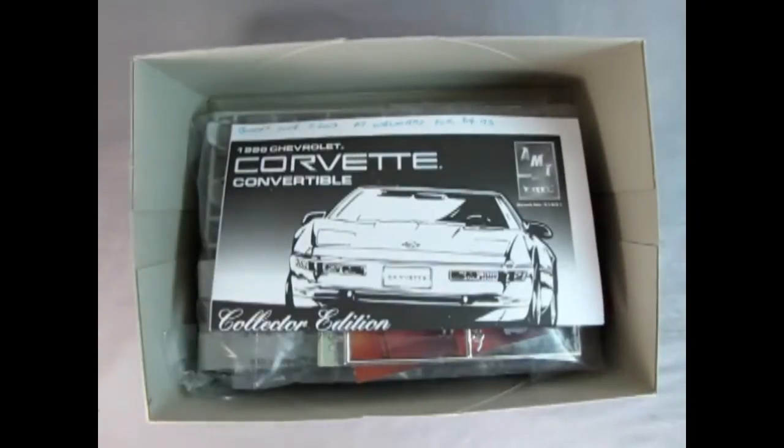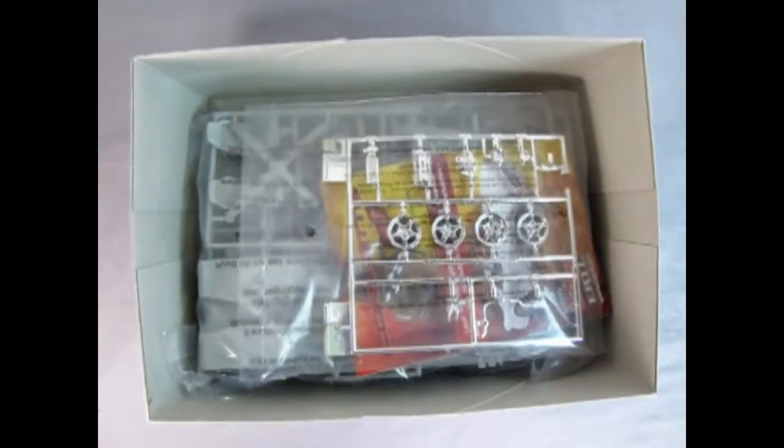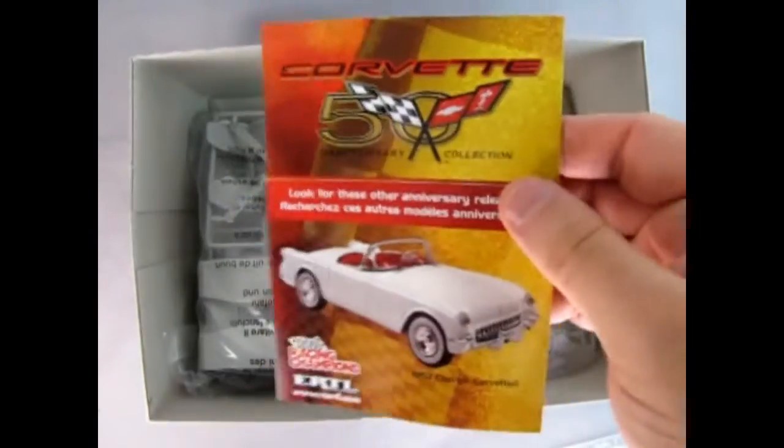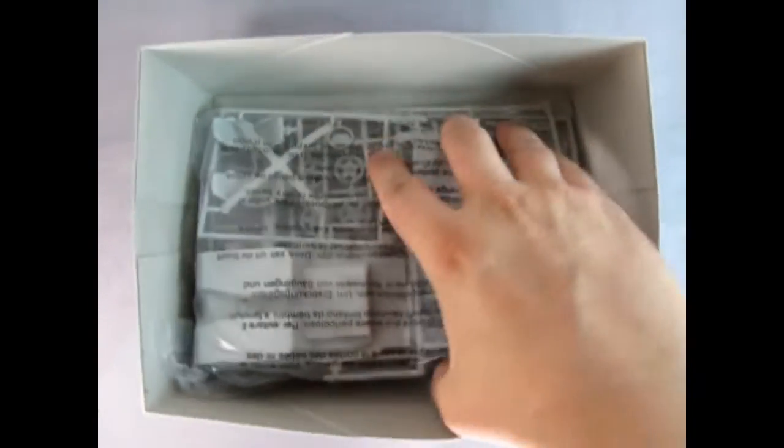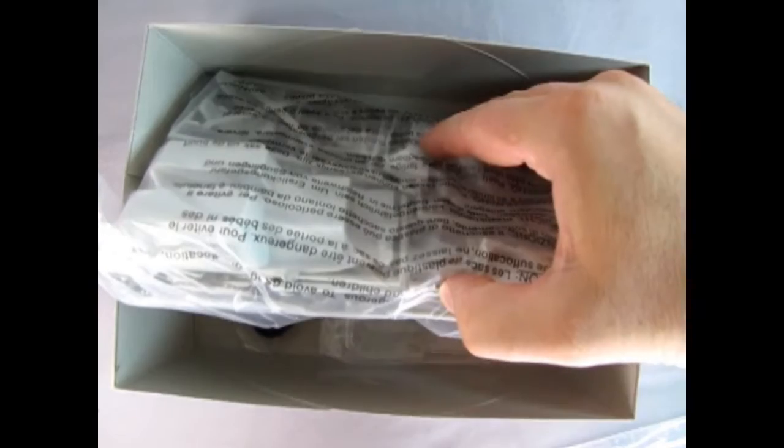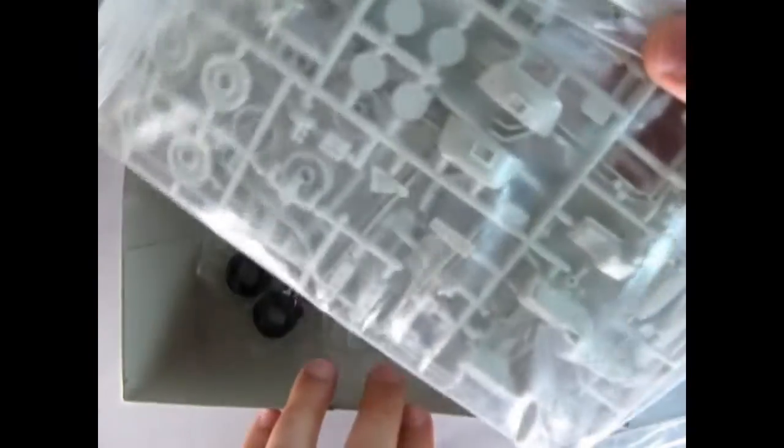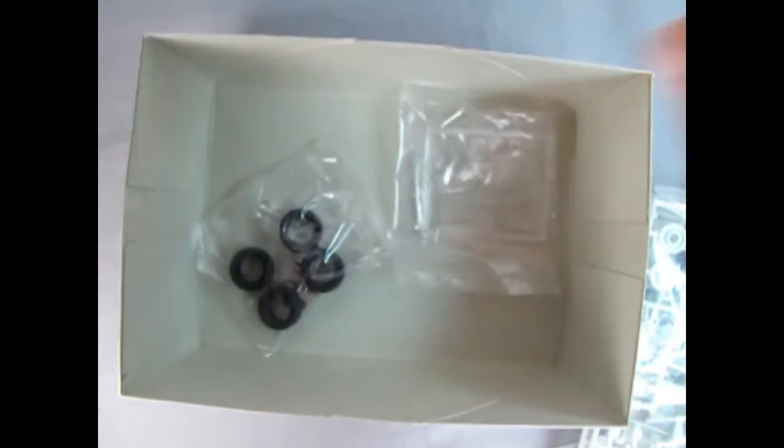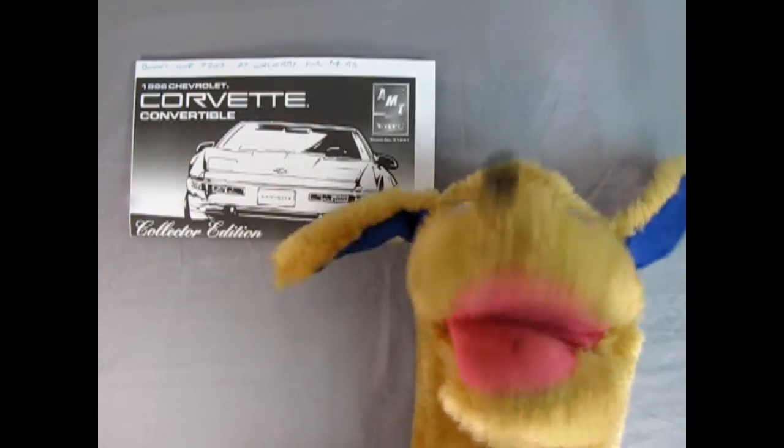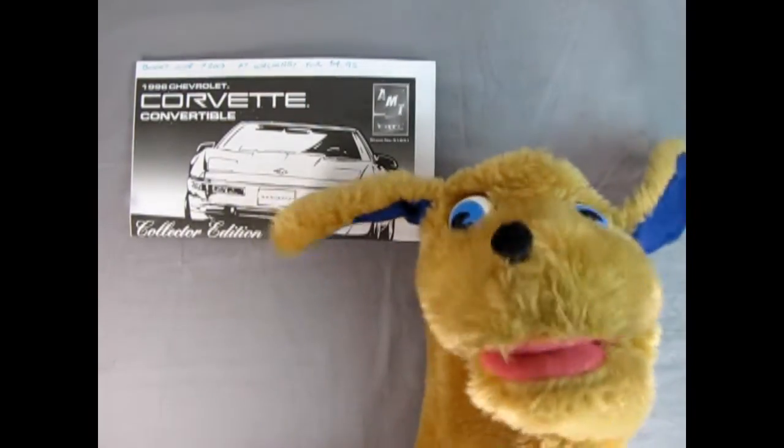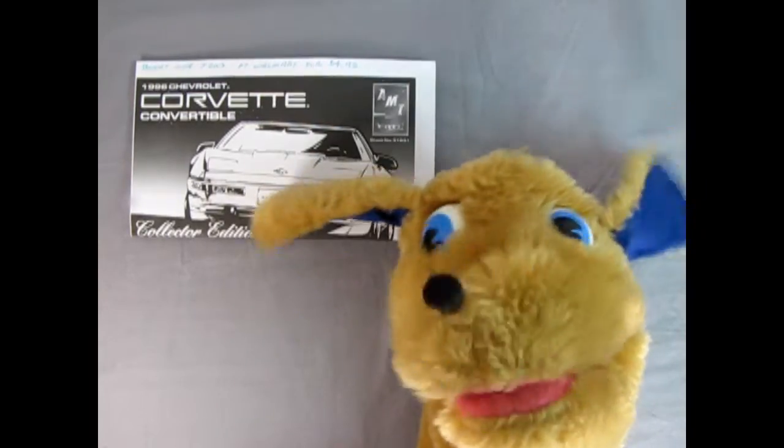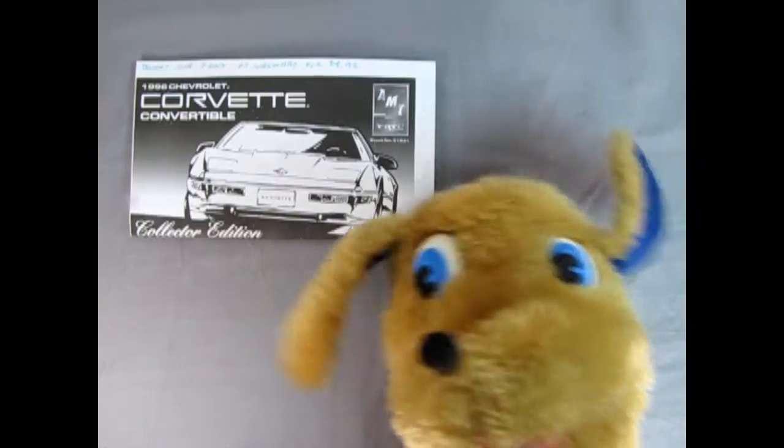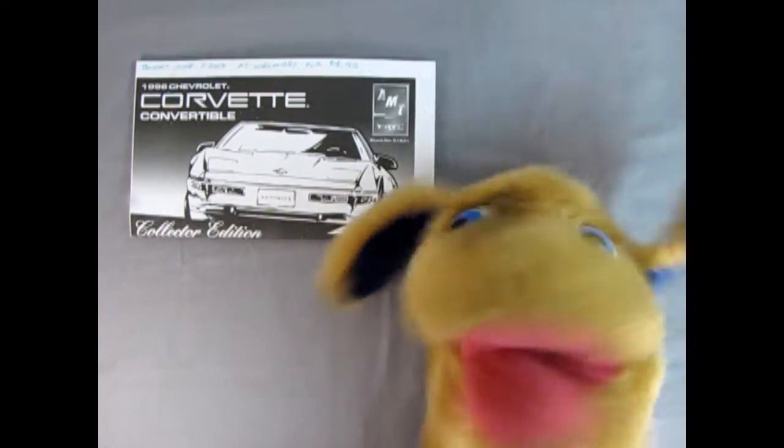Here we've got our Corvette body, our instructions, we also have our chrome parts, a 50th anniversary collector card set, and then we've got all our grey plastic components, our tires and our glass. This is Danny the dog with a very important question for Generation X and that is who let the dogs out. Woof woof woof.